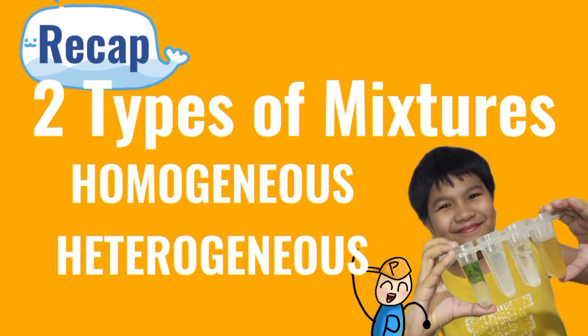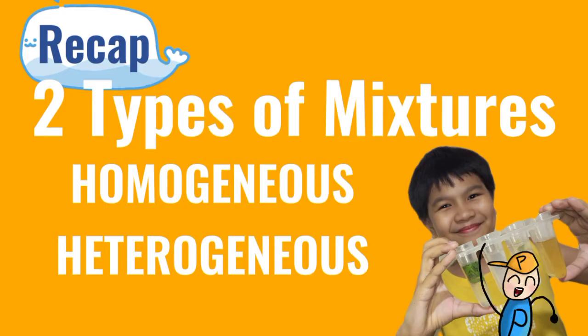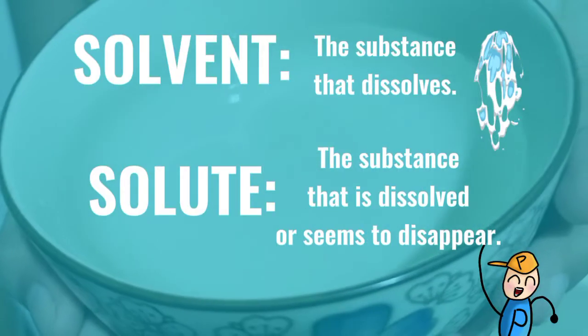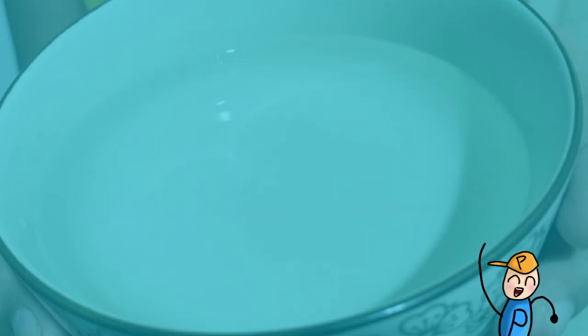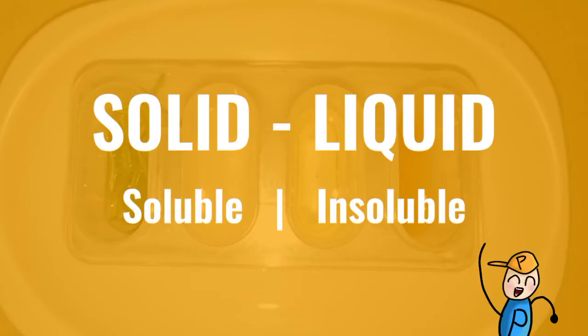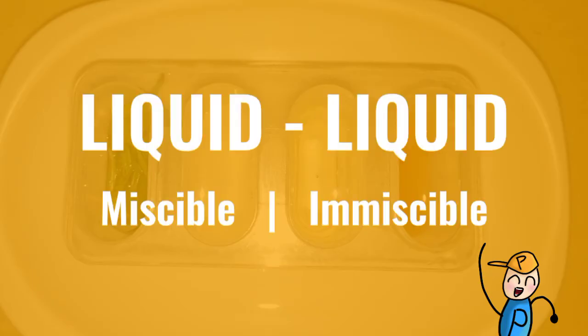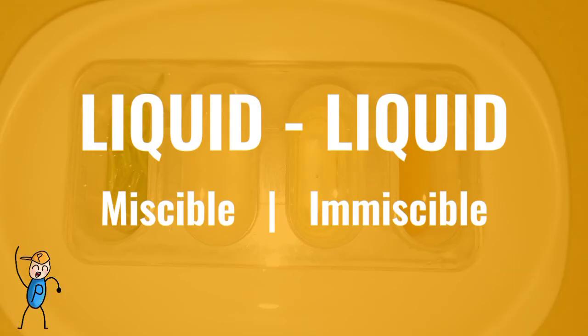Recap time! Two types of mixtures: the homogeneous mixture and heterogeneous mixture. Solvent — the substance that dissolves; our solvent is water. Solute — the substance that is dissolved or seems to disappear. If the mixture is a solid-liquid solution, we may use the term soluble if it dissolves, and insoluble if it doesn't. If the mixture is a liquid-to-liquid solution, we may use the term miscible if substances are mixed evenly, and immiscible if they are not.